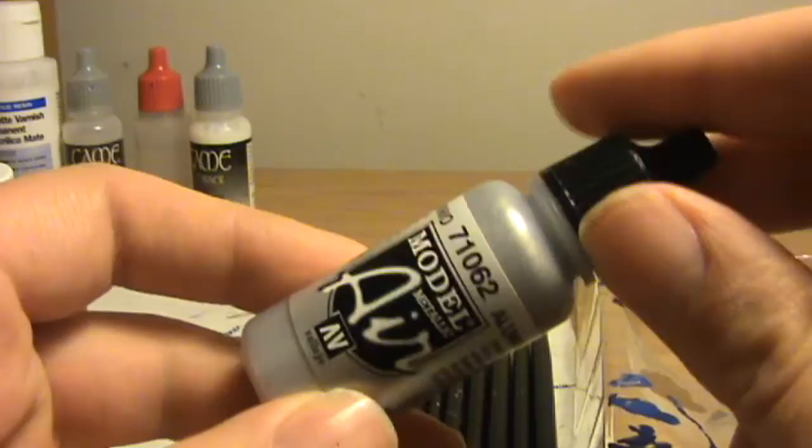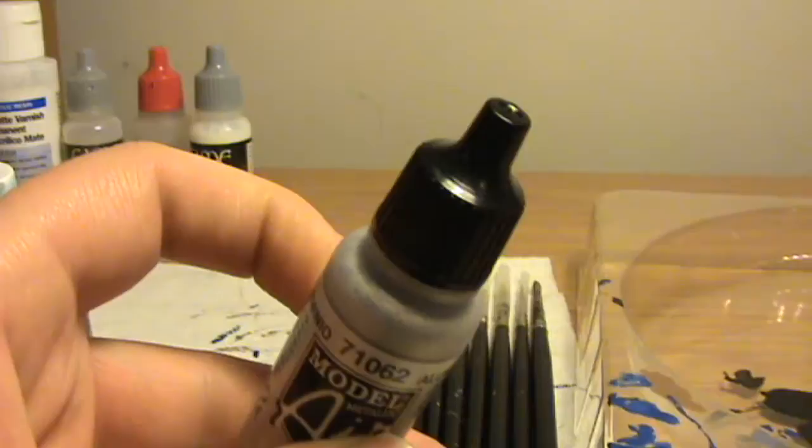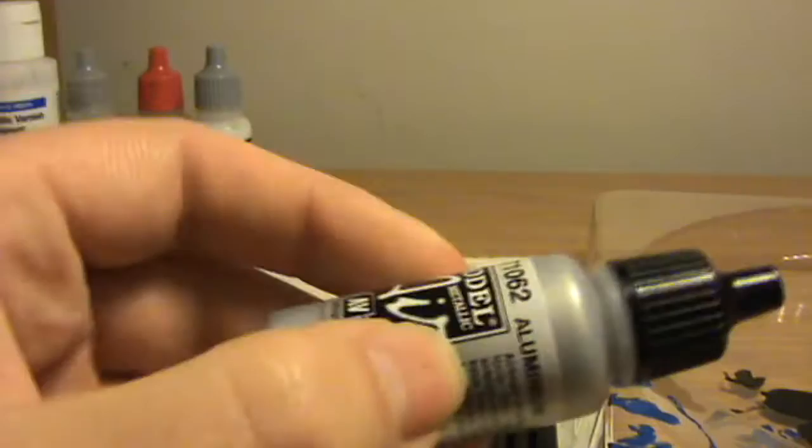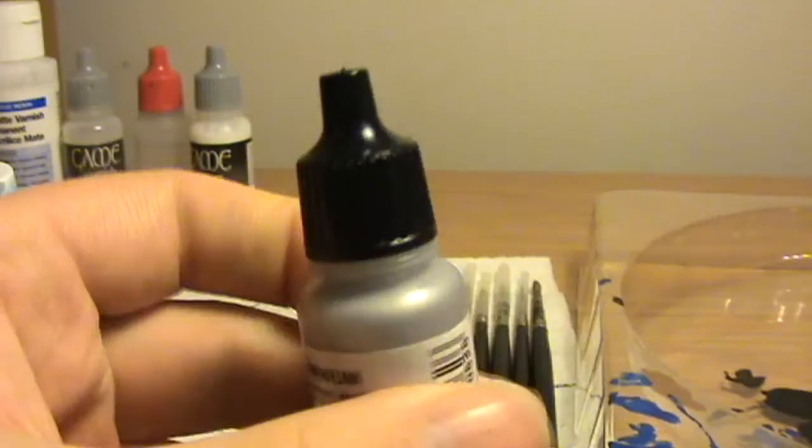Whereas the paints that I use, Vallejo, they all come in dropper bottles like this. As you can see, you just literally squirt it straight out the nozzle and you can accurately control how much paint you want out. There's no possibility of you splitting it over by knocking it with your paintbrush or your hand. It's not going to dry out because it's a tight seal around the bottle there.